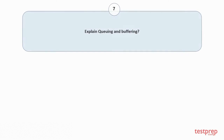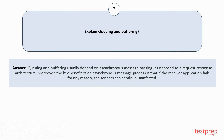Question number 7: Explain queuing and buffering? Queuing and buffering usually depend on asynchronous message passing, as opposed to a request-response architecture. Moreover, the key benefit of an asynchronous message process is that if the receiver application fails for any reason, the senders can continue unaffected.